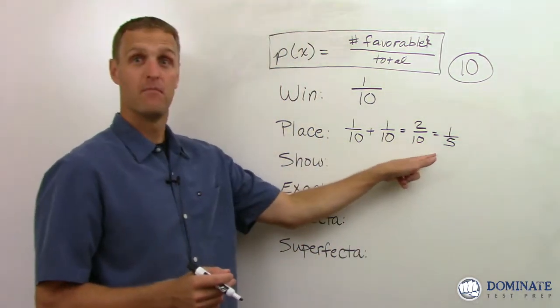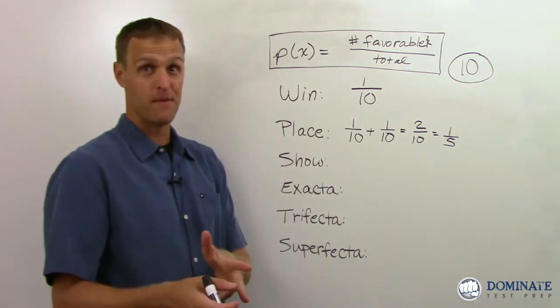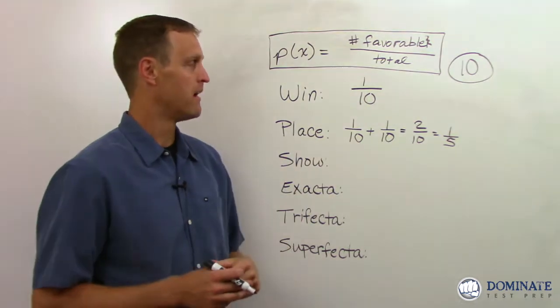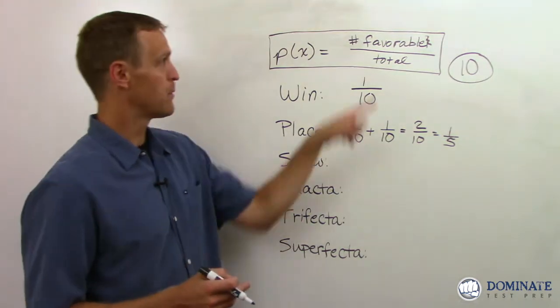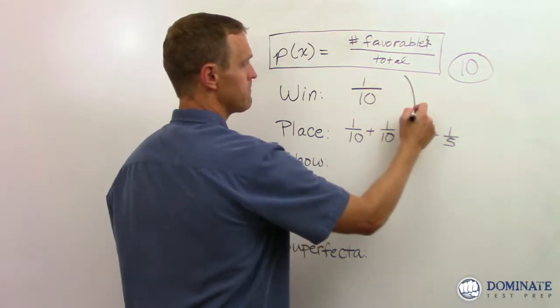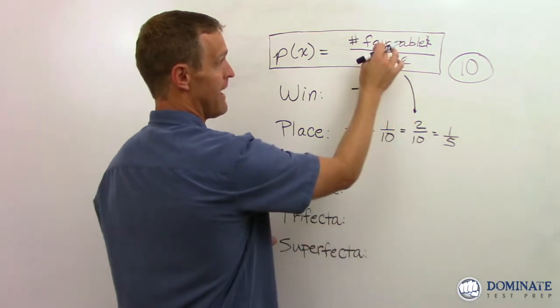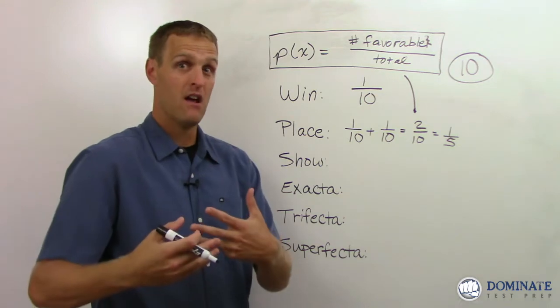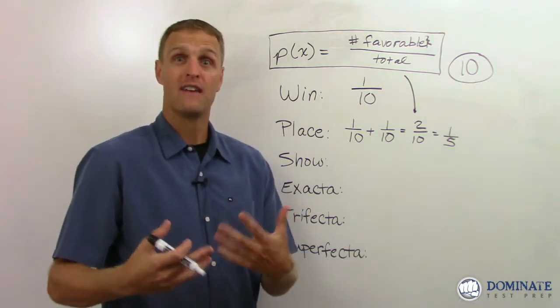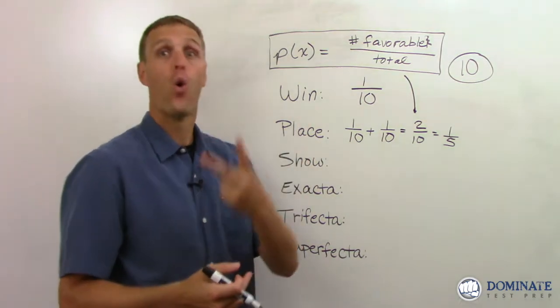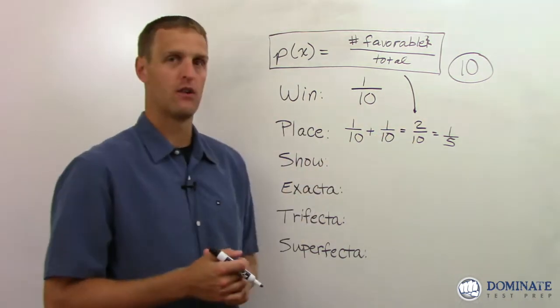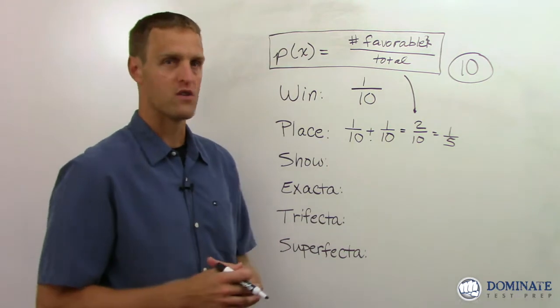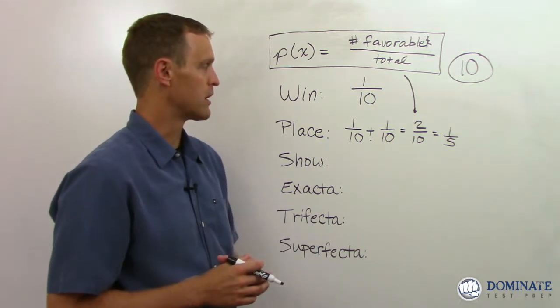Either of those outcomes satisfies what we placed a bet on. And therefore, we have a two out of 10 or one out of five chance of winning a place bet. Better odds, better probabilities. You don't win as much money because it's better odds, but one out of five chance in the case of the Belmont of winning a place bet. And incidentally, we could also use that rule that simply says two favorable outcomes out of 10 total outcomes. So even if you didn't remember the addition rule for the or situation, there you go.